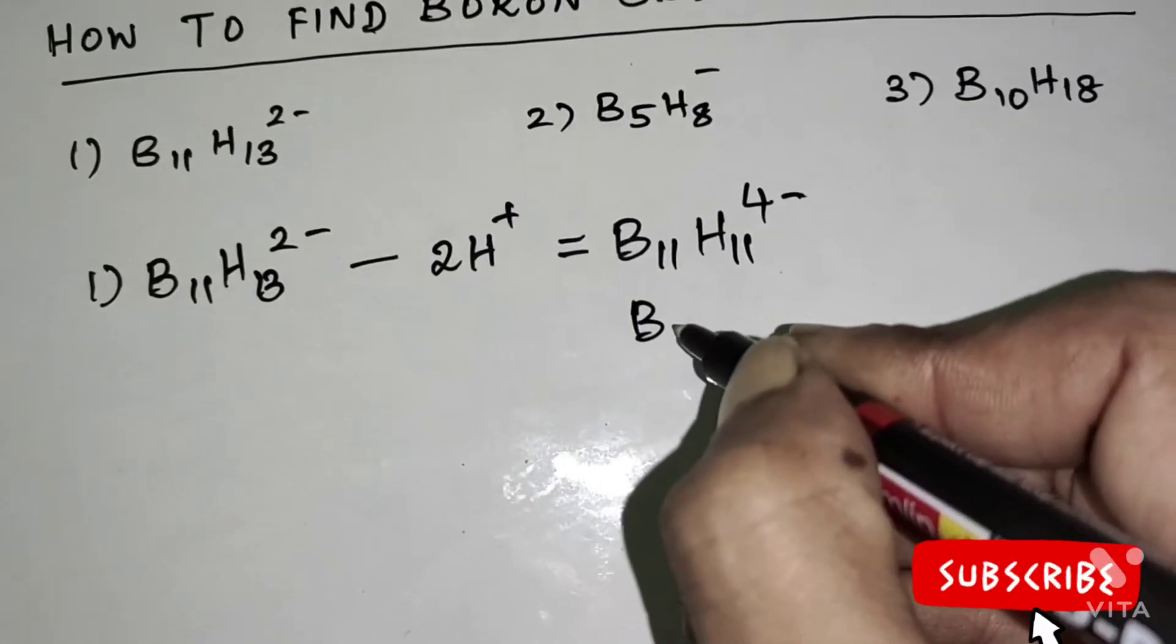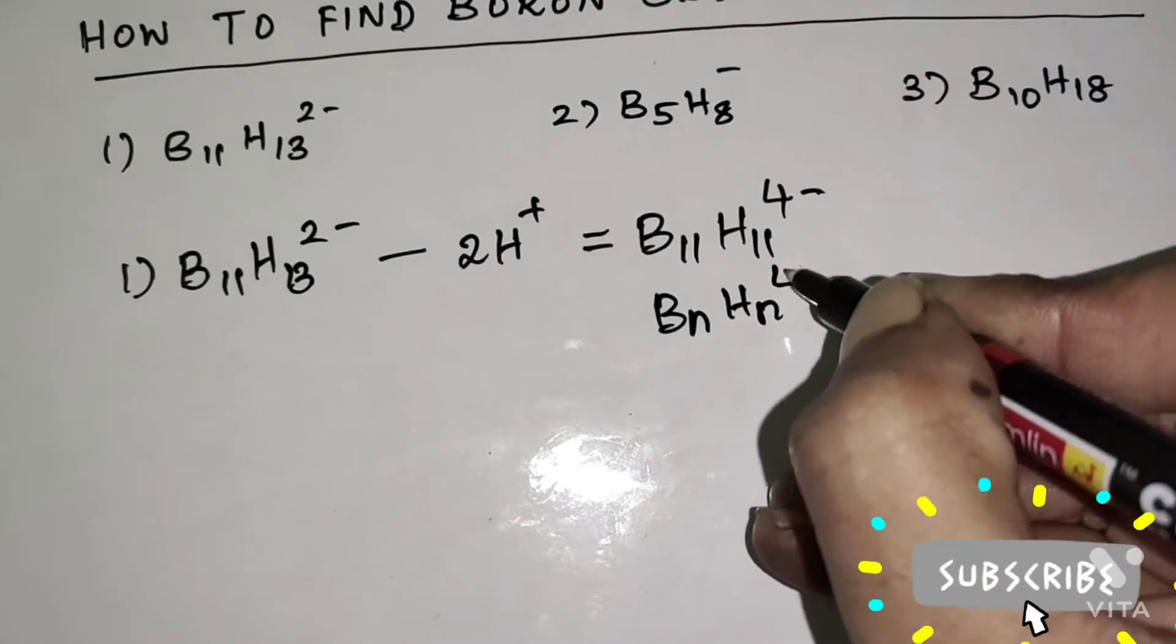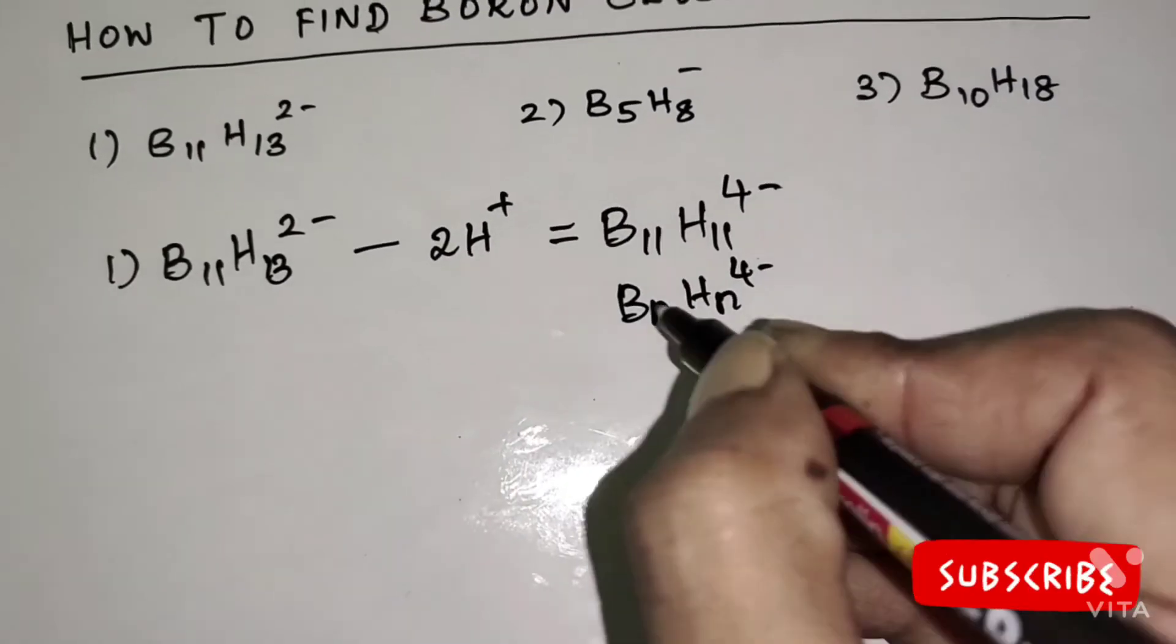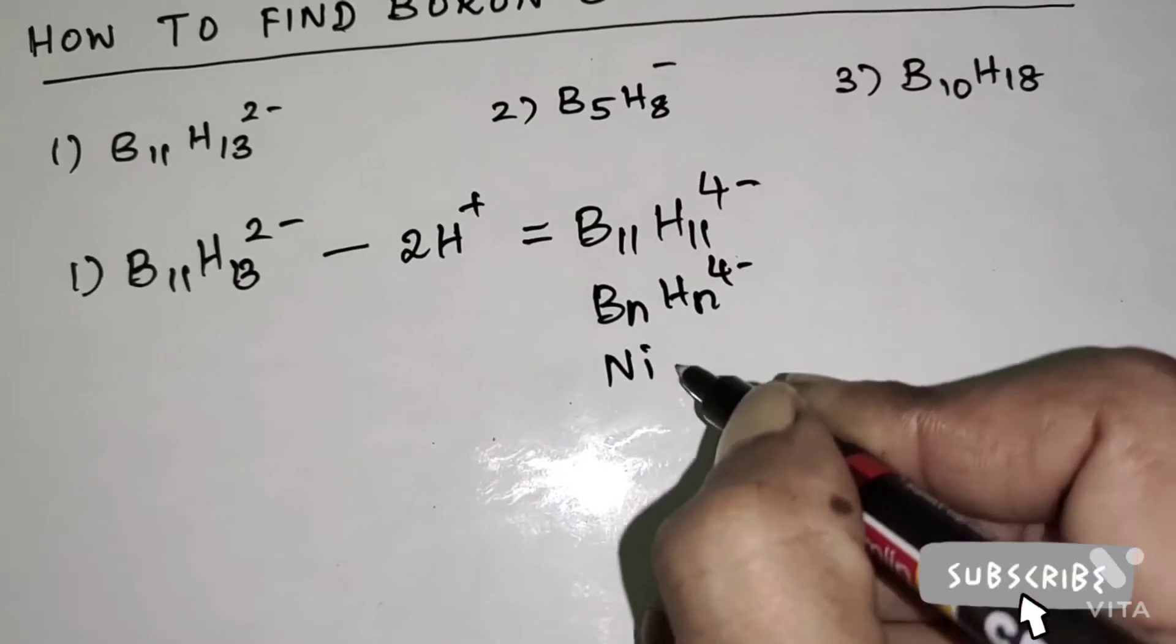This formula also written as BnHn four minus. Therefore, this compound is Nido.